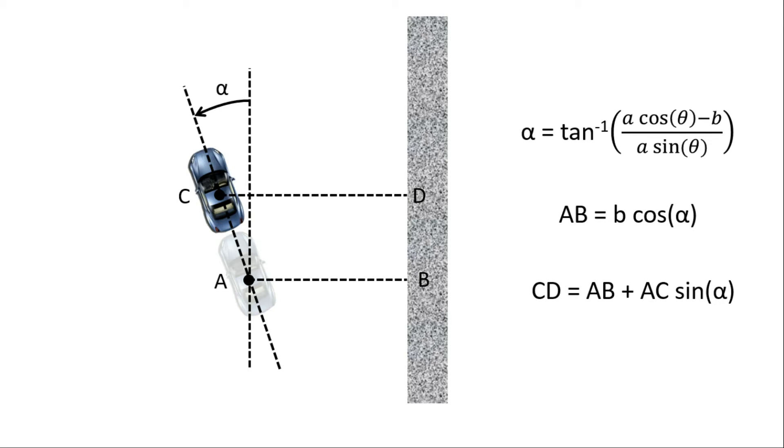Therefore, the distance becomes AB plus AC into sin alpha. Hence, the error to be compensated for is the difference between CD and the desired trajectory.